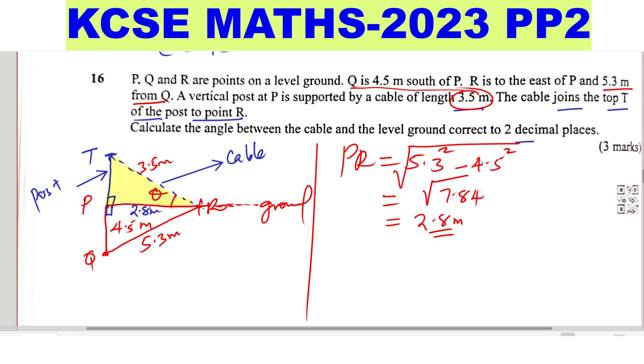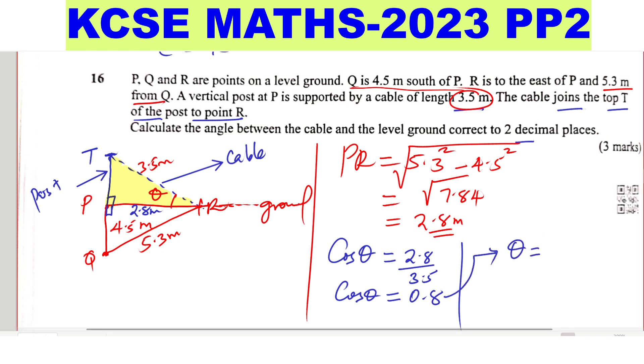Now using triangle TPR, the one that is shaded in yellow, now we should get that angle. We can use trigonometric ratio and the suitable one to use here is cosine. So cosine of theta is equal to 2.8, which is PR 2.8 divided by the hypotenuse, which is TR 3.5. So cosine of theta is equal to 2.8 divided by 3.5. That will give 0.8. So therefore theta will be given by the cosine inverse of 0.8. And this will be 36.87 degrees.